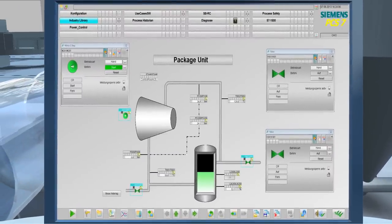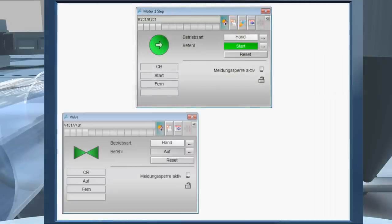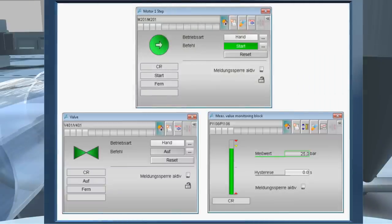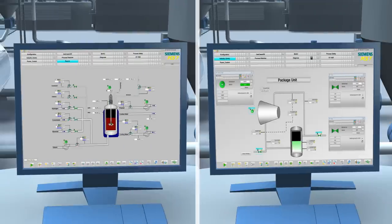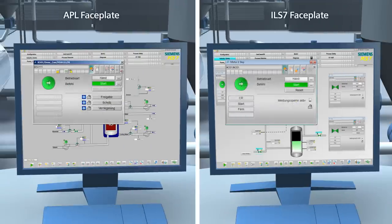For example: motors, valves, or measured values. The operator can use these block icons and faceplates to control the unit directly via the operator station. Both the icons and the faceplates retain the familiar appearance of SIMATIC PCS 7. For the operator, a package unit looks exactly like an APL function in the process control system.